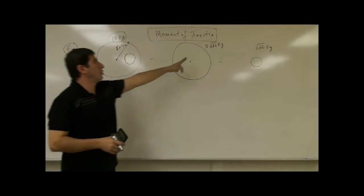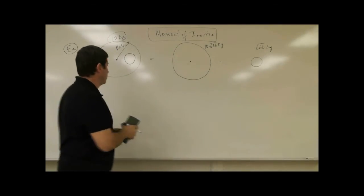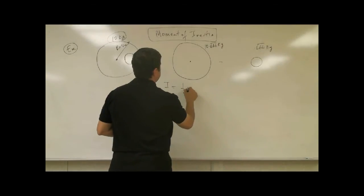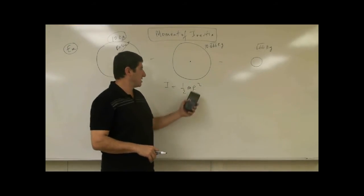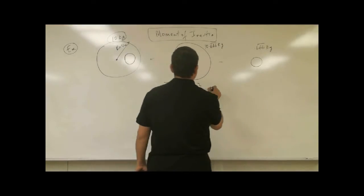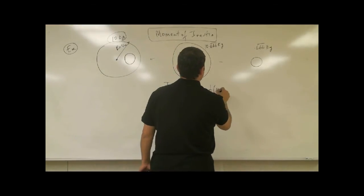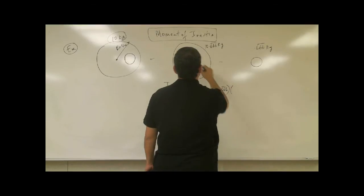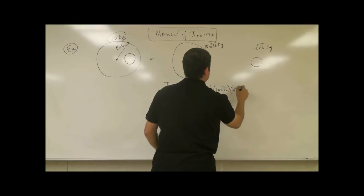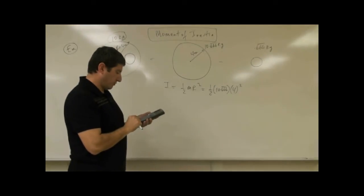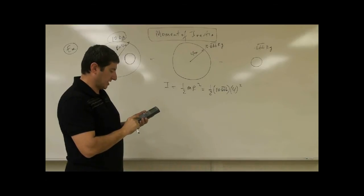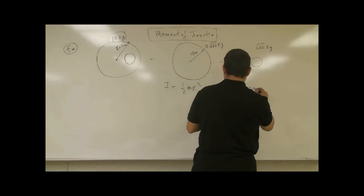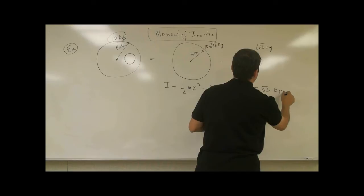So what would be the moment of inertia of this solid disc about its center? That moment of inertia is one-half m r squared. Remember from physics one that the moment of inertia of a solid disc is half m r squared. So we do one-half times its mass, 10.6̄, times its radius, which is 4 meters squared. That's 0.5 times 10.6̄ times 16.